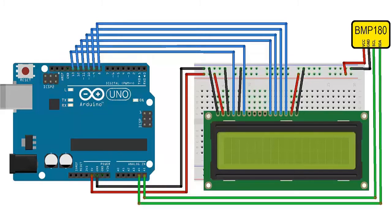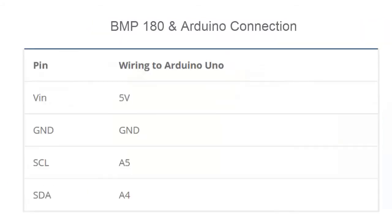This is the circuit diagram showing the LCD and BMP180 connected to Arduino. We have used pin numbers 8, 2, and 13 to interface the LCD with Arduino. For the BMP180 connection, SCL is connected to A5 and SDA is connected to A4.